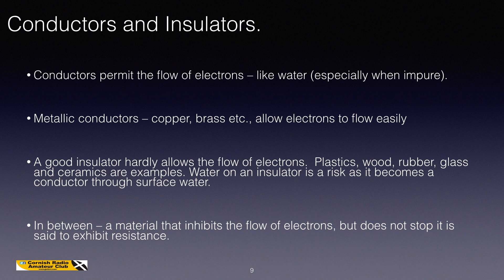Looking at conductors and insulators. Conductors permit the flow of electrons, like water, especially when it is impure. Distilled water actually is a reasonable insulator, but it only takes the minutest amount of impurity to make it a conductor because it allows free electrons to flow. Metallic conductors, copper, brass, etc., have free electrons in the outer shell and they allow electrons to flow easily.